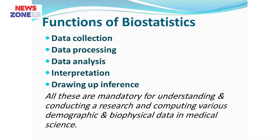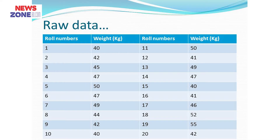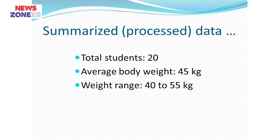This is a picture of a microscope — we use this instrument to see very small or tiny materials. On the other hand, biostatistics is used to see or understand a very large set of data. Look at this image of raw data, from which we can find very minimal information. But this summarized data shows the total number of students, average body weight, and weight range — very easy to understand.